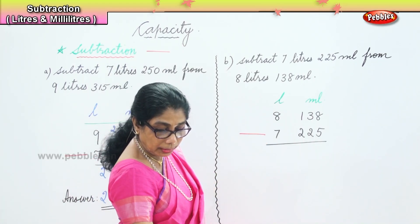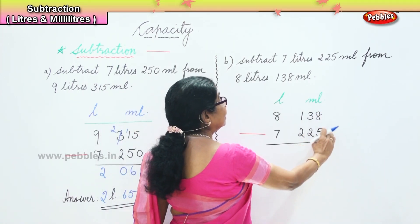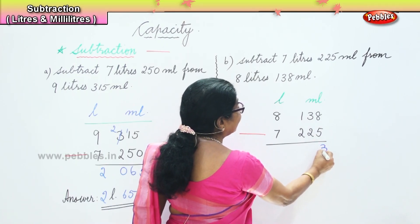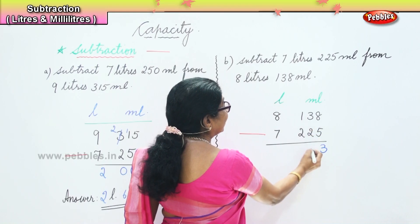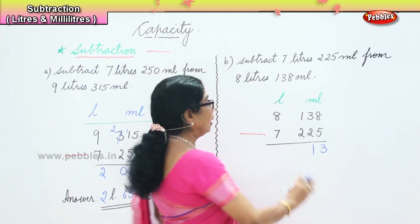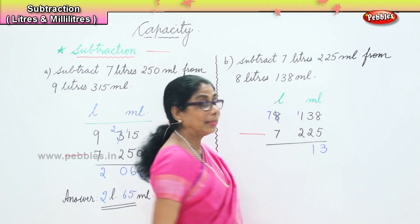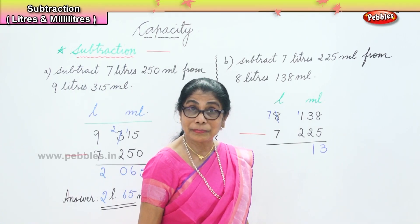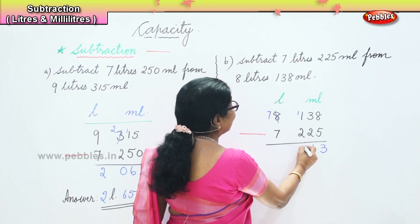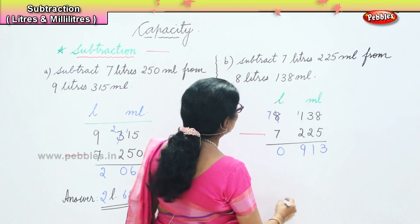8 take away 5 is 3. Then 3 take away 2 is 1, but we have 2 down and 1 here, so we need to borrow and bring that 1 — it becomes 11. 11 take away 2 is 9. 7 take away 7 is 0.